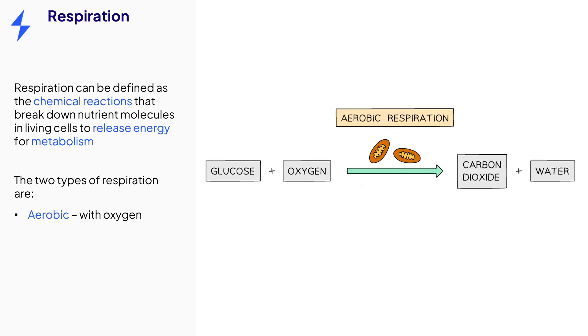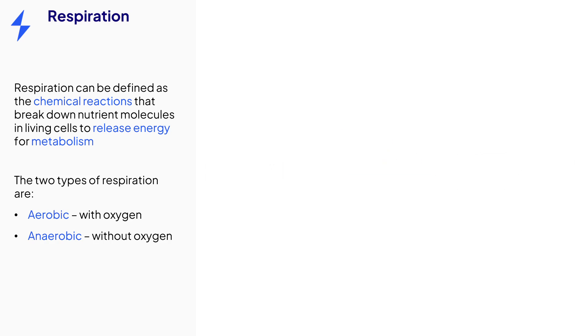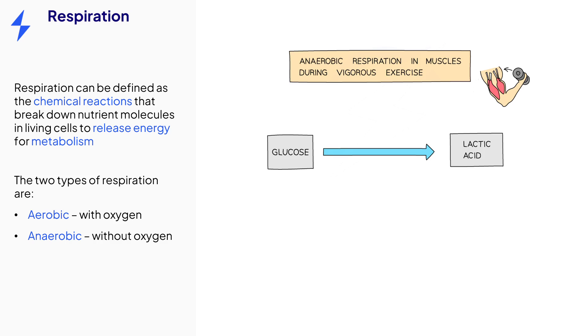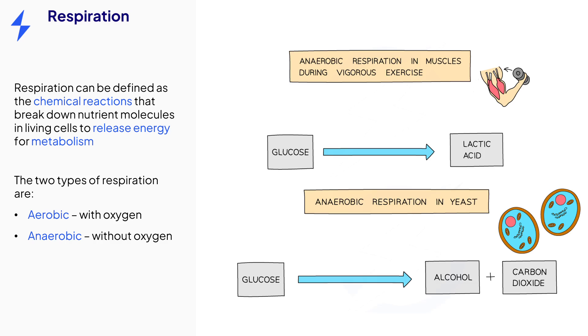Aerobic respiration which takes place in the presence of oxygen, and anaerobic respiration which does not require oxygen. There are two types of anaerobic respiration: one takes place in animals and the other in yeast and plant cells. You do need to know about all these types of respiration as part of your course.